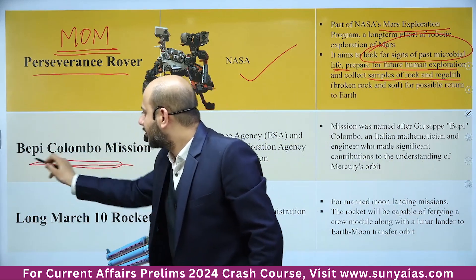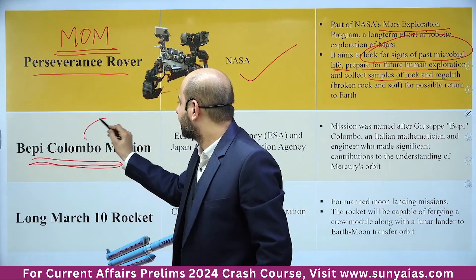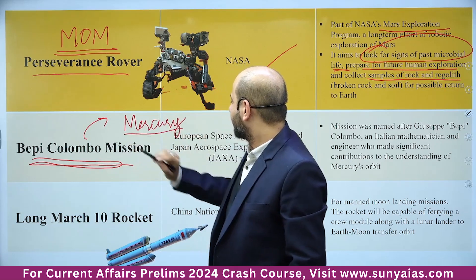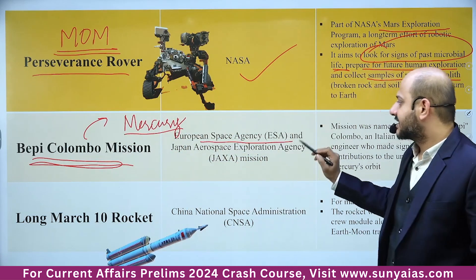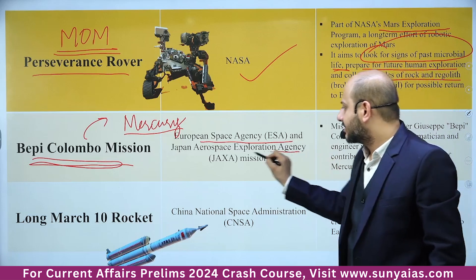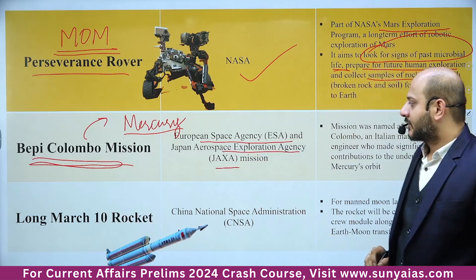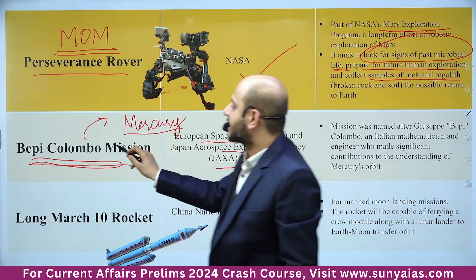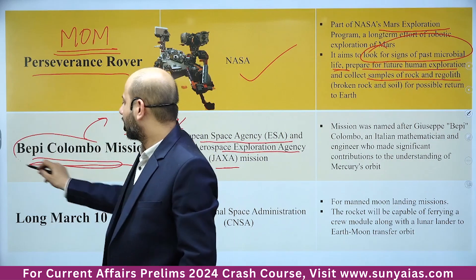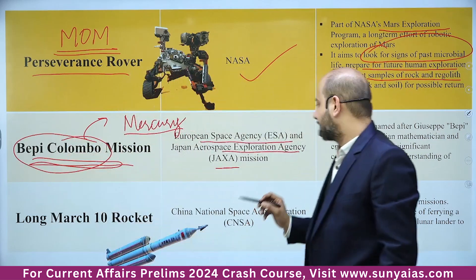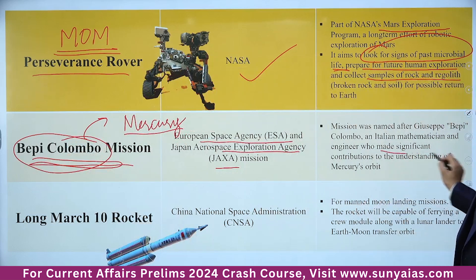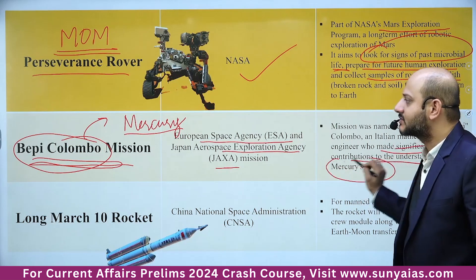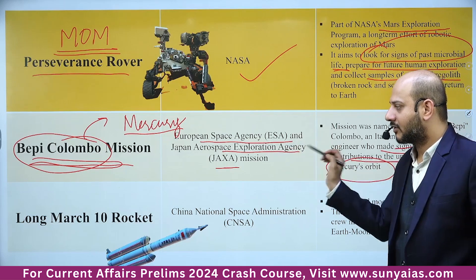BepiColombo mission is for Mercury. It is a joint mission by the European Space Agency and JAXA — the Japan Aerospace Exploration Agency. It is named after scientist BepiColombo, who made significant contributions to understanding Mercury's orbit. Mark BepiColombo mission as important.